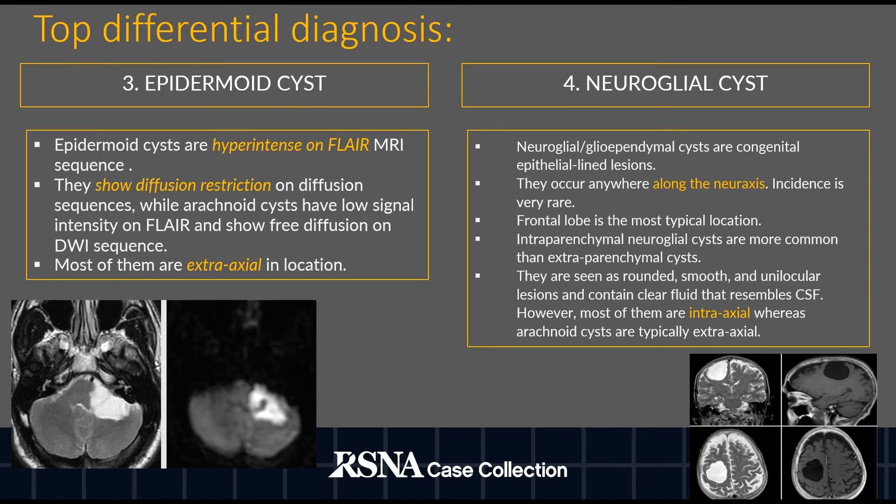While arachnoid cysts do not show diffusion restriction, the last differential is neuroglial cyst. These are commonly intraxial in location, can occur anywhere along the neuraxis, follow CSF signal intensity in all sequences, and do not show any contrast enhancement.